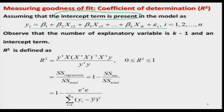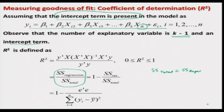In this case I have taken xₖ, so the total number of explanatory variables are x₂, x₃, …, xₖ, which are k−1 in number, plus there is an intercept term, so the total number I am keeping as k. Now the coefficient of determination R² is defined as follows. You have done regression analysis and its analysis of variance. Under analysis of variance you had done the relationship: sum of squares total equals sum of squares regression plus sum of squares error (residuals).